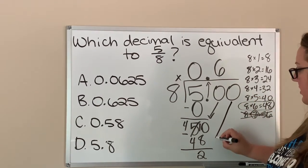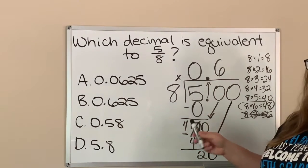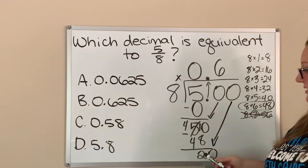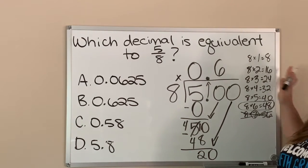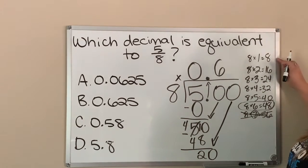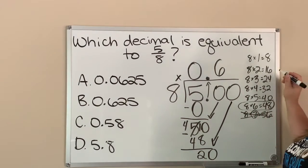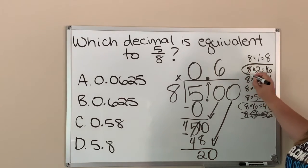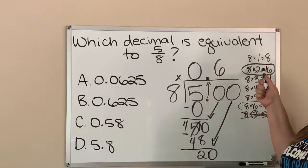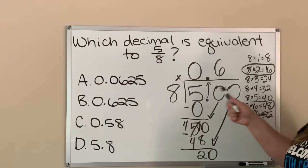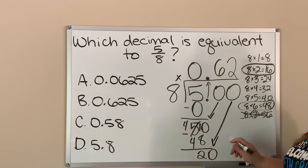I come up here to this zero and bring it down. Now I ask myself how many times can eight go into 20. I've already got my multiplication tables over here, so I can see that eight can't go into 20 evenly, but it can get very close with 16 — because 8×2=16.